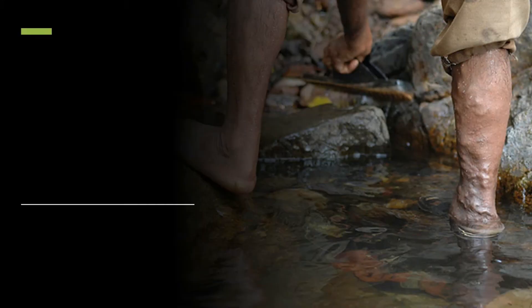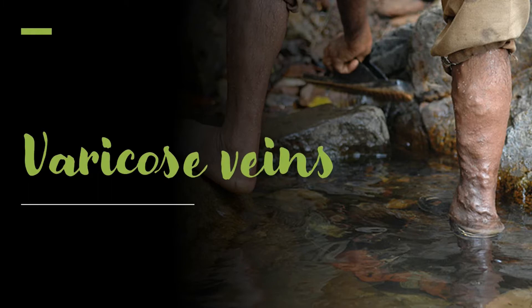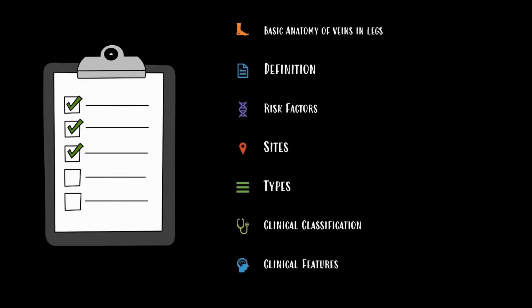In this video we will be learning about varicose veins. This will be part one of the video, and we will be discussing the basic anatomy of veins in legs, the definition of varicose veins, the risk factors, the most probable sites where varicose veins occur, the types, the clinical classifications, and the clinical features.